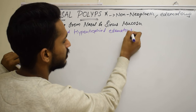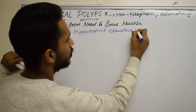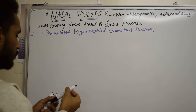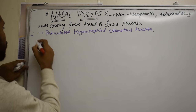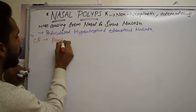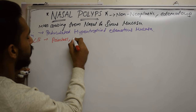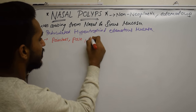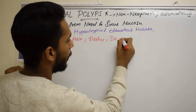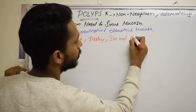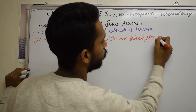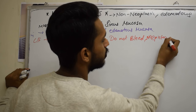There are some characteristics of nasal polyps: they are painless, they appear pale in color, they are fleshy, and they do not bleed. So in case of nasal polyps we will not see any epistaxis — that is, nasal bleeding.